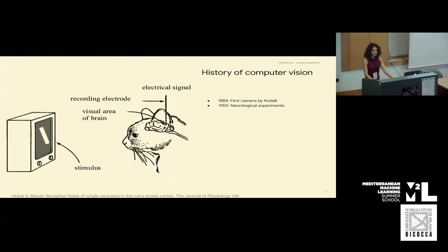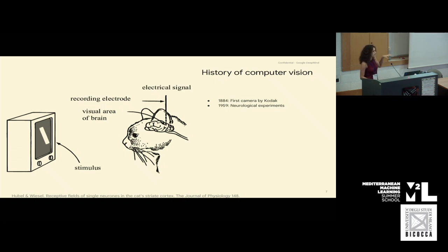Fast forward to the 60s, there are some neuroscientific experiments — this one being done by Hubel and Wiesel, an experiment on a cat's brain. They observed that when they show a screen to cats with certain patterns, it fires certain neurons in the brain of the cat. That is an important neurological experiment on how our visual cortex works.